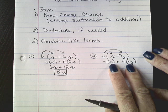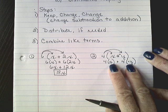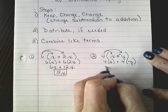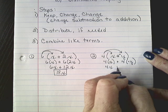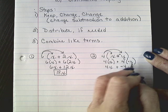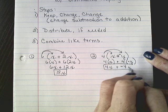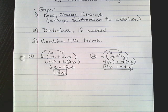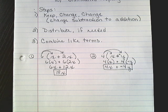Remember, in front of those variables, it's automatically a 1. So 4 times 1x is 4x, and 4 times negative 1y is negative 4y. And we cannot simplify any further than that because we have two different variables.